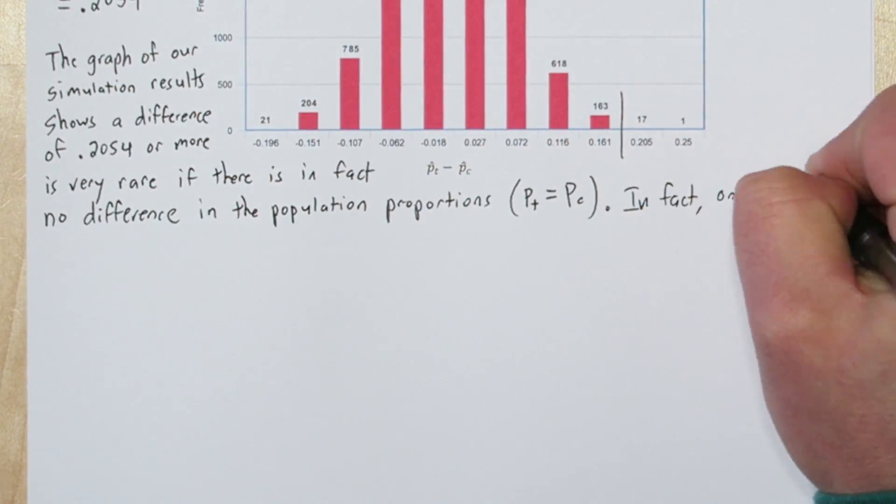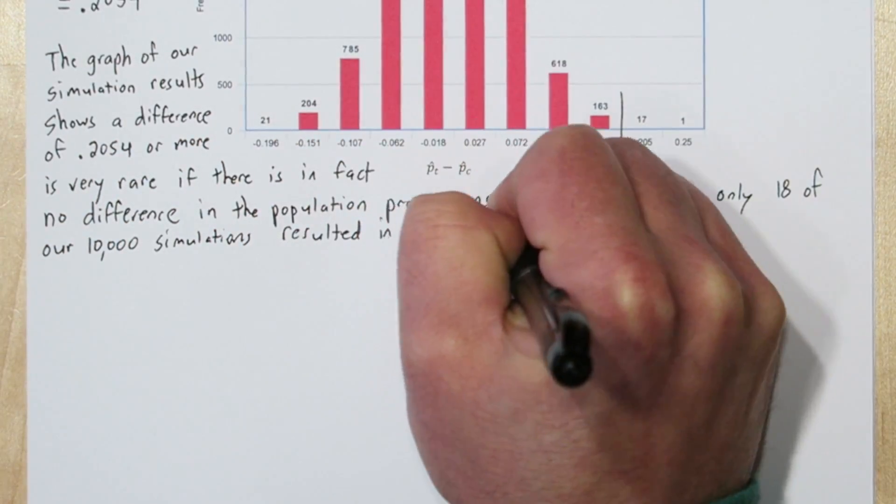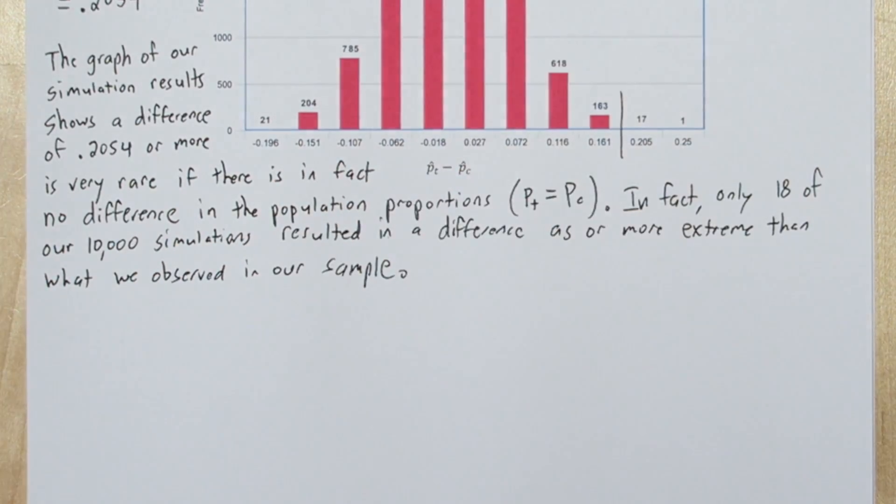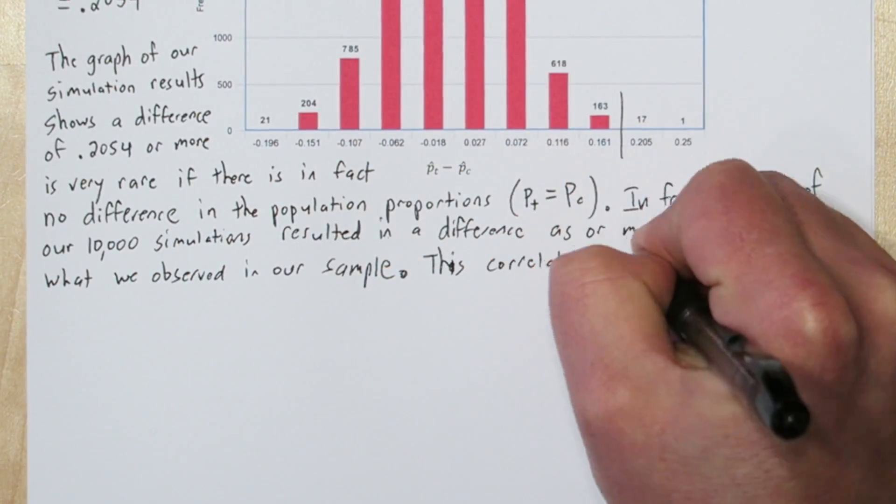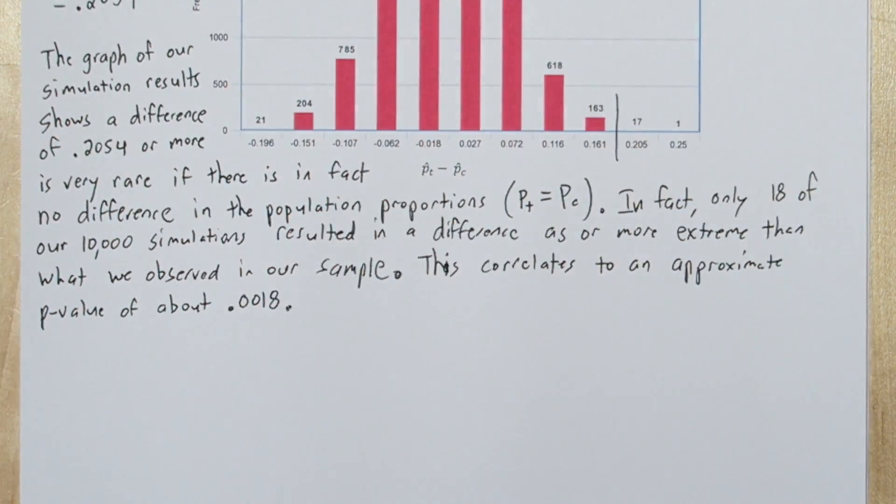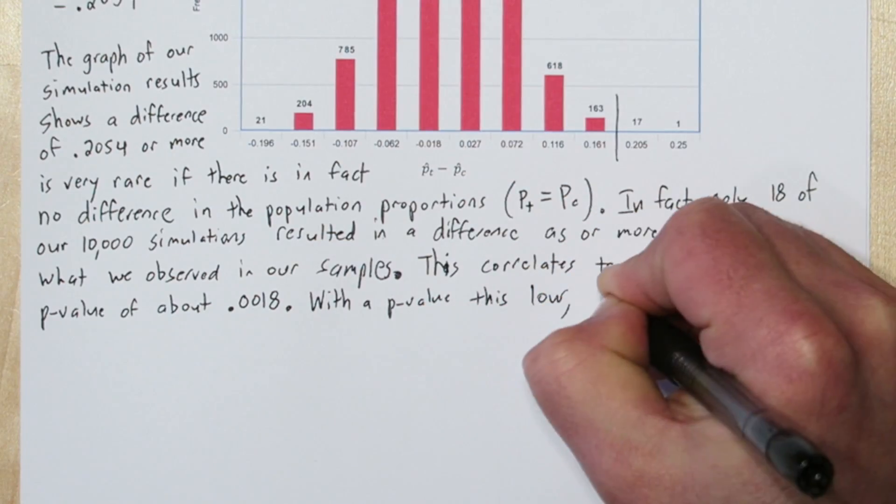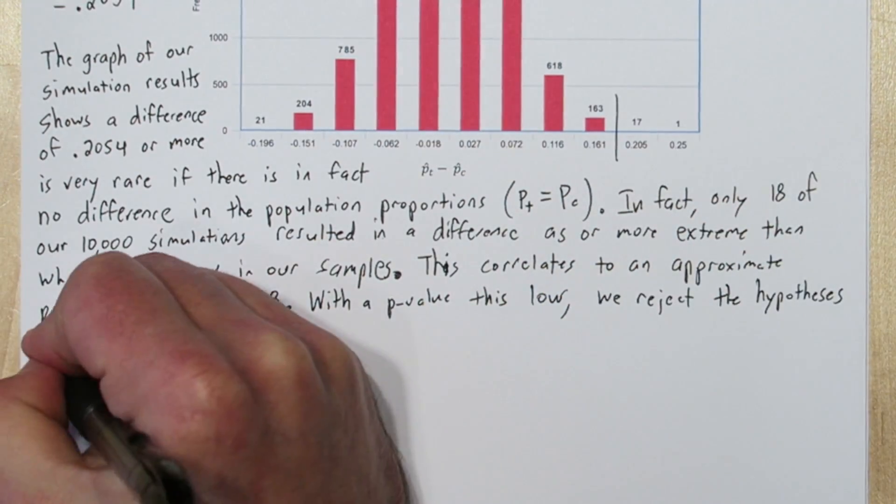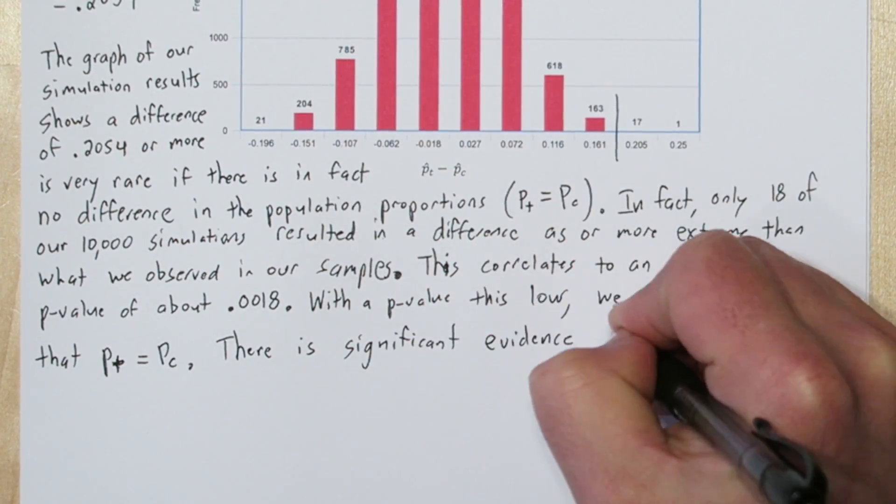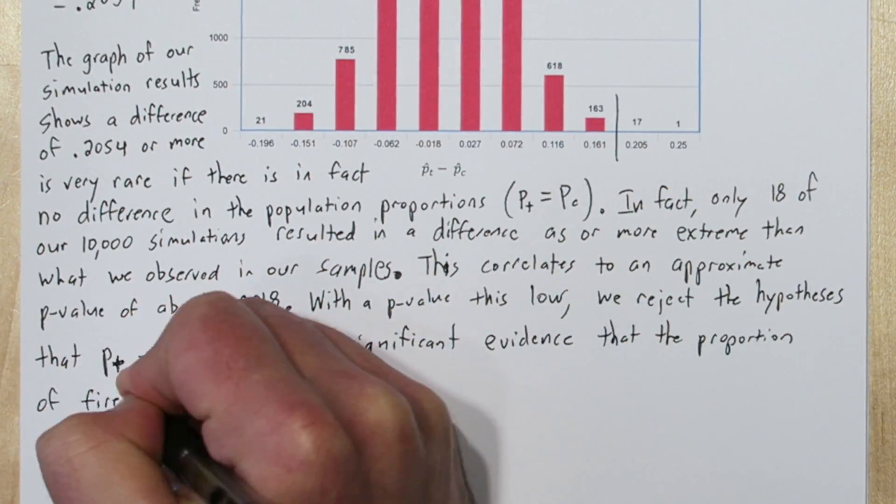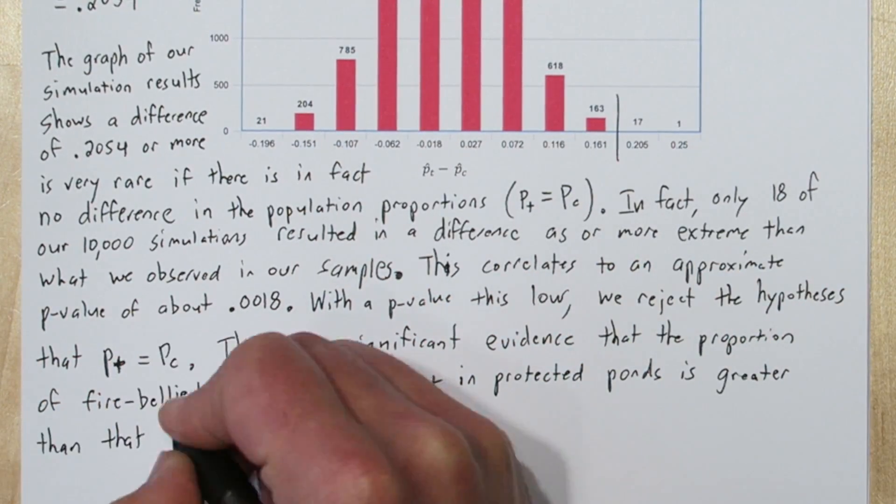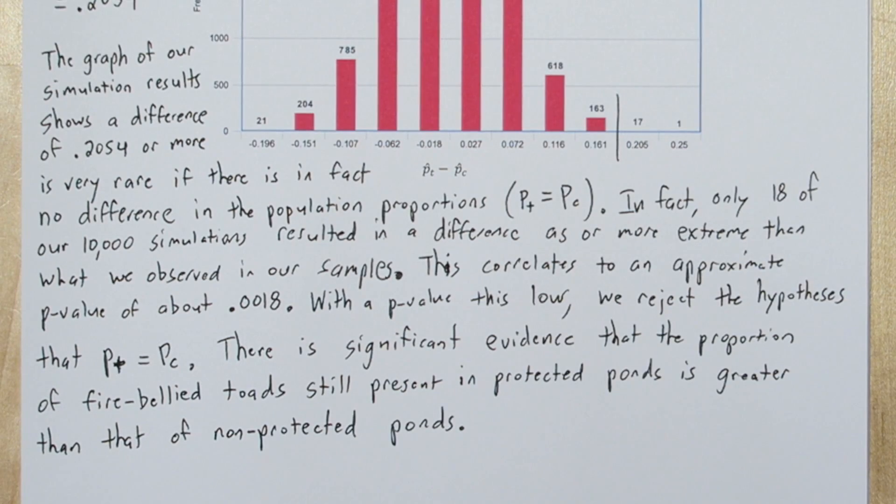In fact, only 18 of our 10,000 simulations resulted in a difference as or more extreme than what we observed in our samples. This correlates to an approximate p-value of about 0.0018. With the p-value this low, we reject the hypothesis that the proportion of fire-bellied toads present in protected ponds is equal to that of non-protected ponds. There is significant evidence that the true proportion of fire-bellied toads still present in the protected ponds is greater than that of the non-protected ponds.